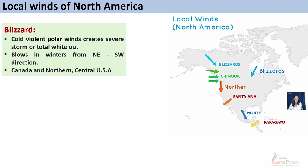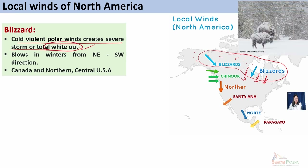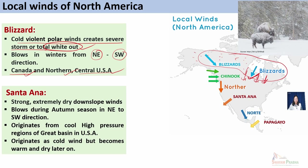The second important local wind of North America is Blizzard — opposite to Chinook. Blizzards are very cold and violent winds which originate in the northern polar areas of Canada and USA, and blow towards southern regions of Canada and USA. They lead to severe winter storms, causing total whiteout in certain parts. Their primary direction is from northeast to southwest, blowing primarily during the winter period. Their main areas of influence are Canada, northern regions of USA, and central USA.